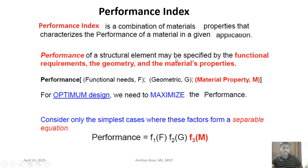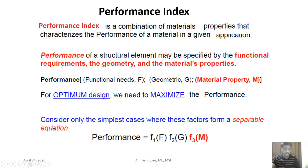The performance of a structural element may be specified by the functional requirement, the geometry, and the material properties. Any structural element or machine component's performance is a function of its functional requirement, its geometrical requirement, and its material requirement. Our objective is to maximize the performance index. Consider the simplest cases where these factors form a separable equation: performance = f(functional needs) × f(geometry) × f(material properties).